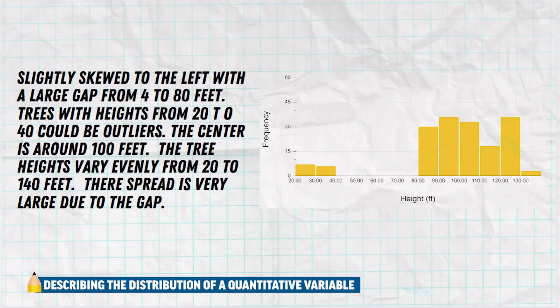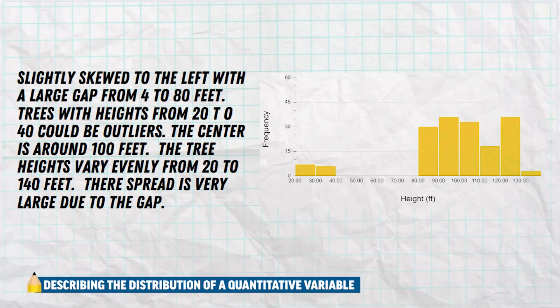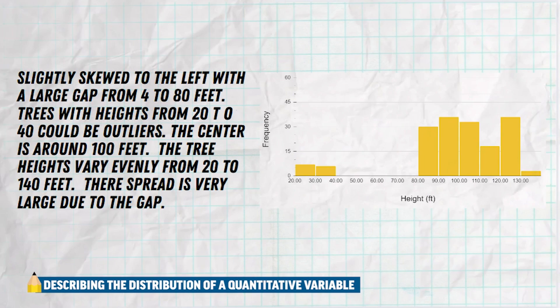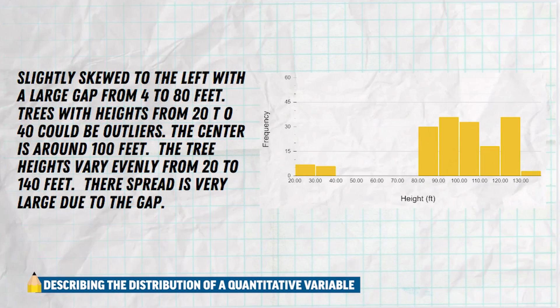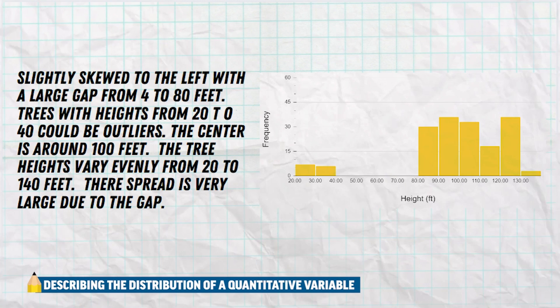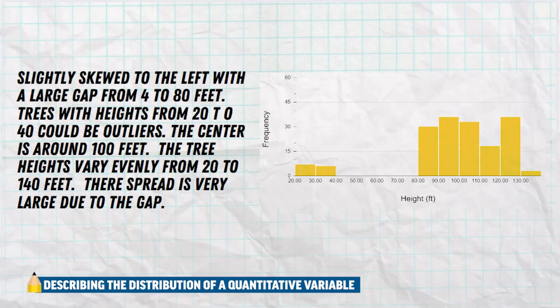Now in any of these graphs that we've just taken a look at, we've got to make sure that we describe the distribution in context. So if you go back and pause, you can read my descriptions and how I give a quick explanation of the shape, the center, and the spread, and if there's any unusual features in every graph. It really doesn't take a whole lot to describe the distribution, but you've got to make sure you mention those four key details.